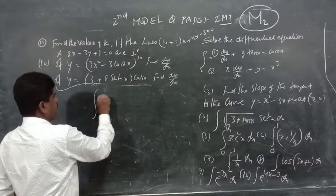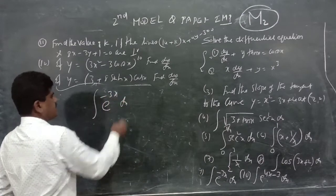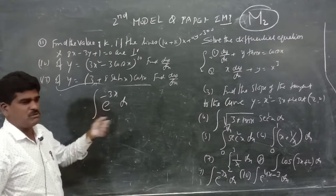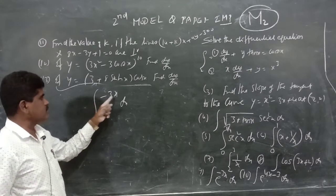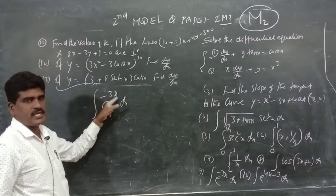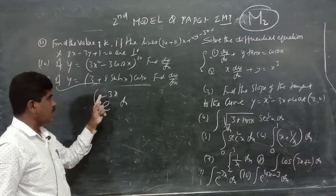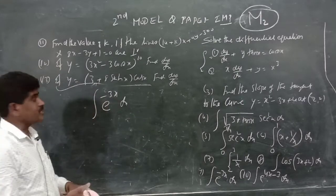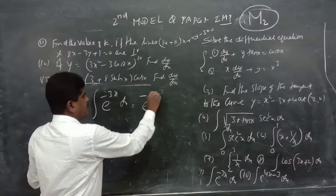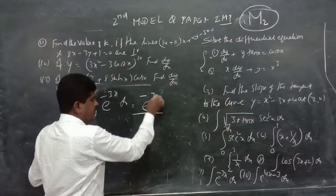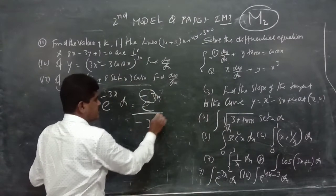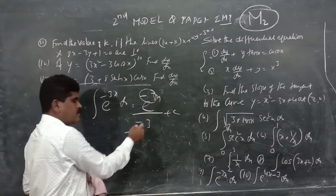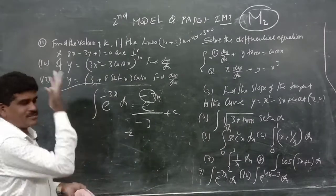Ninth problem: evaluate the integral of e^(minus 3x) dx. Since e is unchanged and we divide by the coefficient of x, the answer is e^(minus 3x) divided by minus 3, plus C.